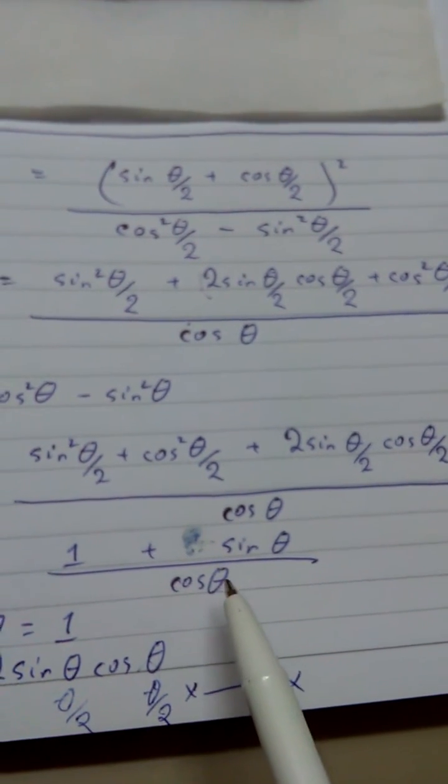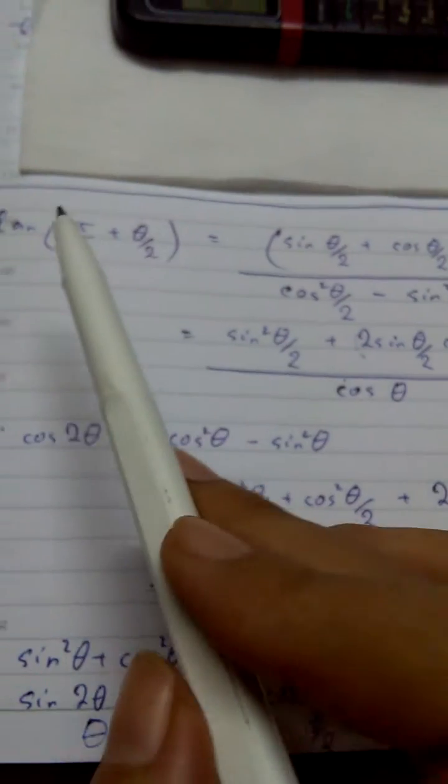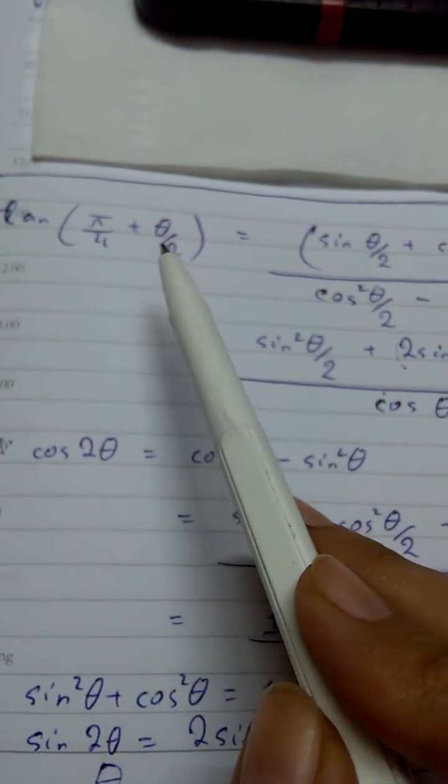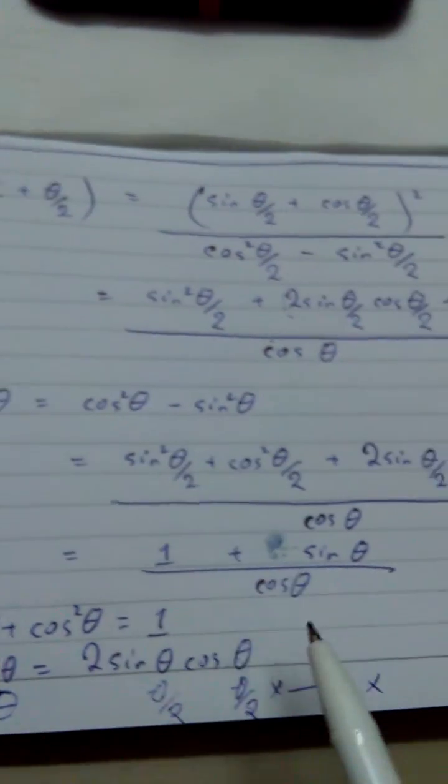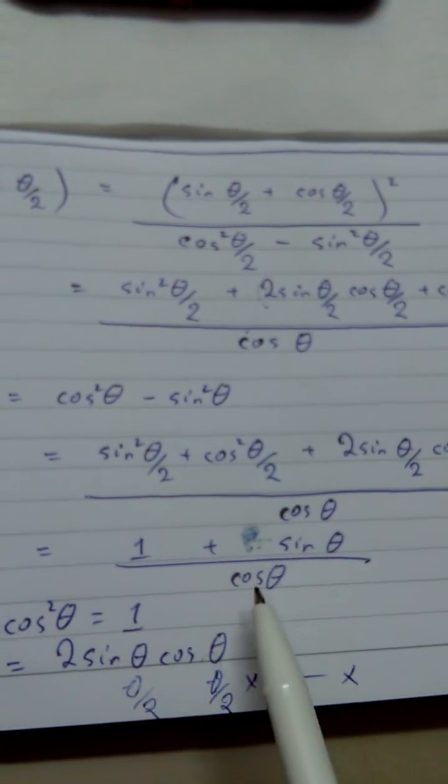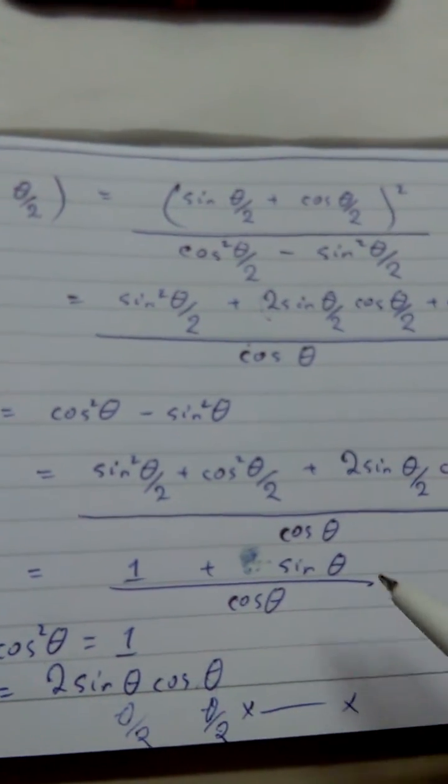So this is my 1, this is my sin θ, and then in the denominator I'm having my cos θ. So this thing tells me that my tan(π/4 + θ/2) is equivalent to this thing: (1 + sin θ)/cos θ. Hope you've understood it.